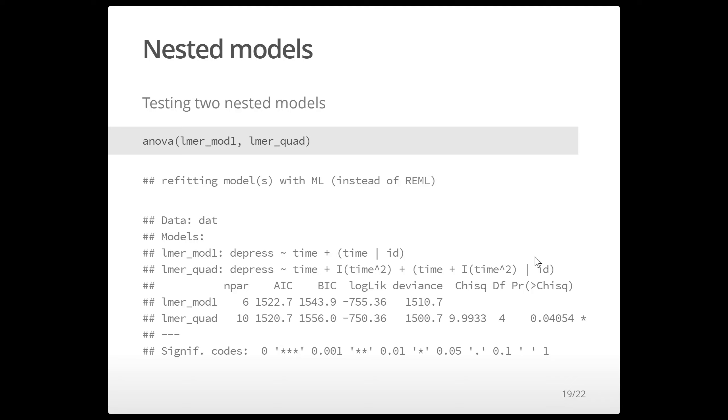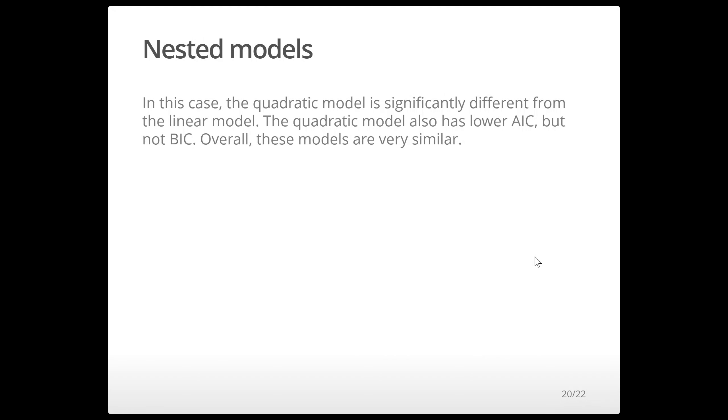AIC is going to be a little bit more liberal, liberal about permitting more parameters. But the bottom line is these models are extremely similar. There's actually not that big a difference between them. You can make a case for either one depending on your needs.